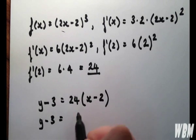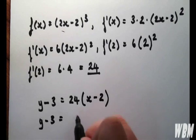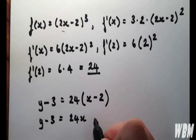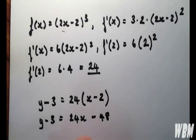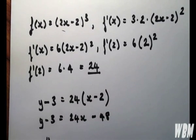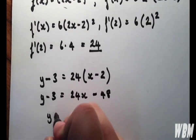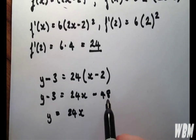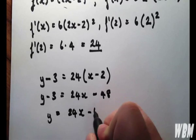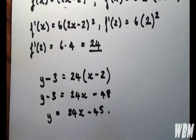And we're now concerned with expanding these brackets. So we have 24x minus 2 times 24, which is 48. So y equals 24x minus 48 plus 3 is minus 45. Thank you for watching.